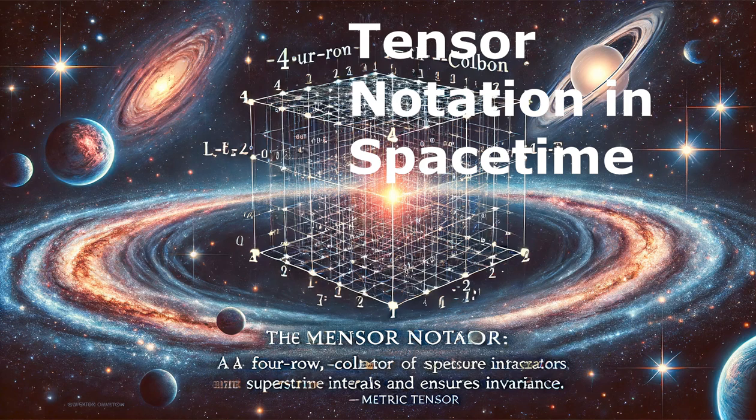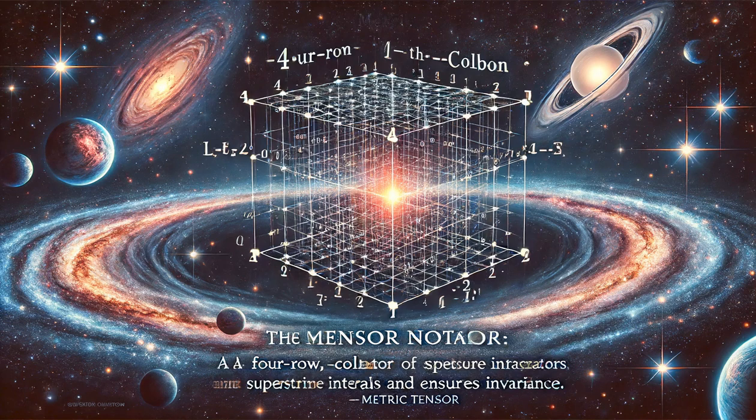Tensor notation in spacetime. To simplify the representation of spacetime intervals, physicists use tensor algebra. Here, coordinates are represented by superscripts representing time and the three spatial dimensions.